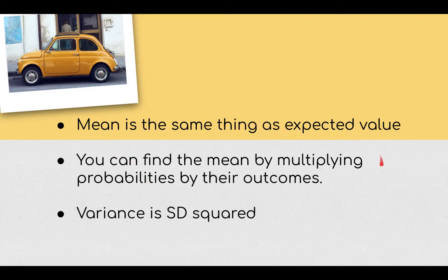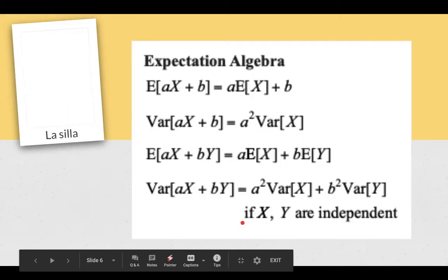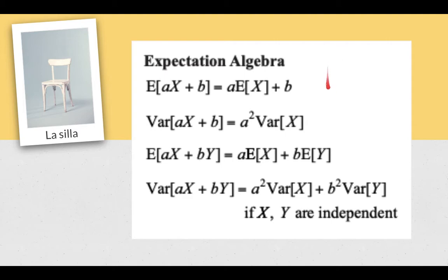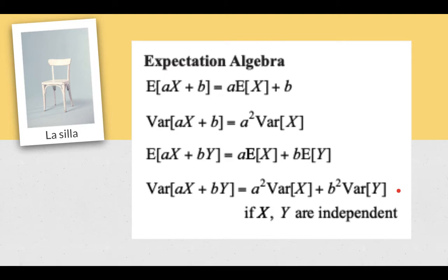So the mean is the same thing as the expected value. You can find the mean by multiplying probabilities by their outcomes or outcomes by their probabilities. And the variance is the standard deviation squared. That's what we've learned so far. This stuff here, I thought best to show you by example what it actually means.